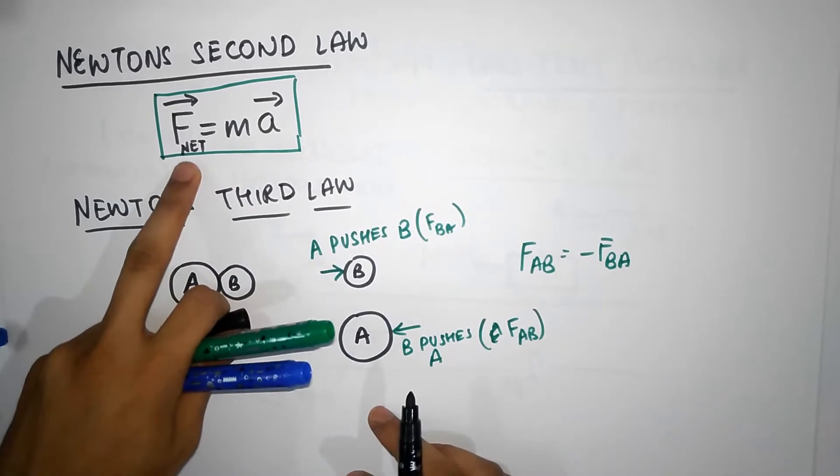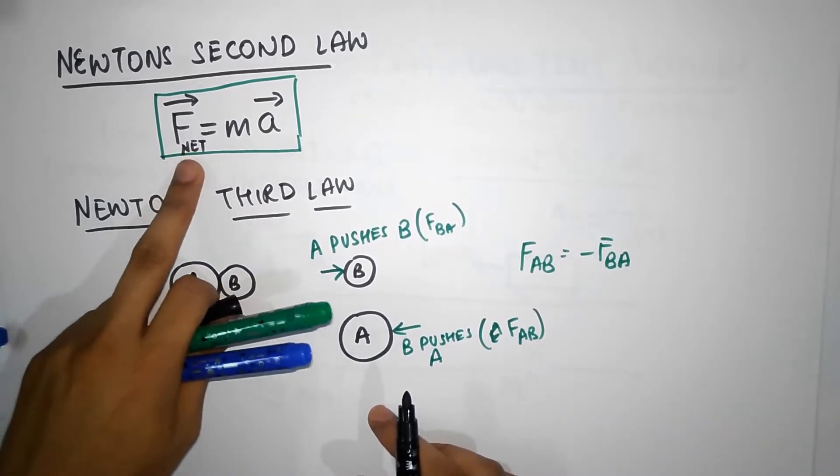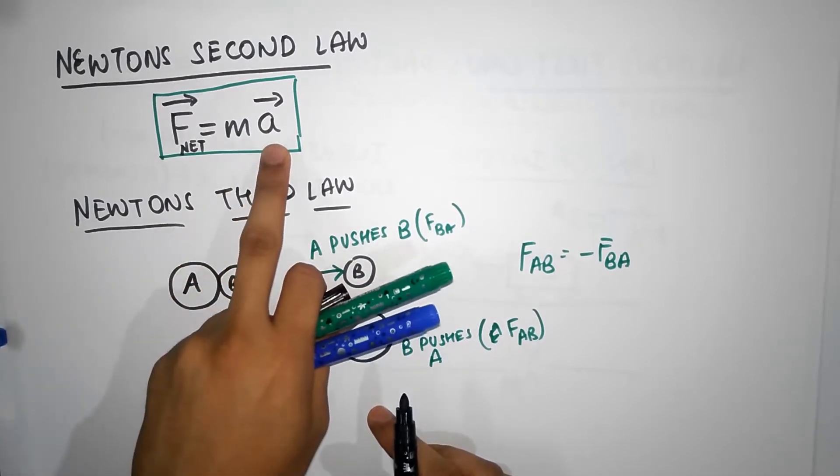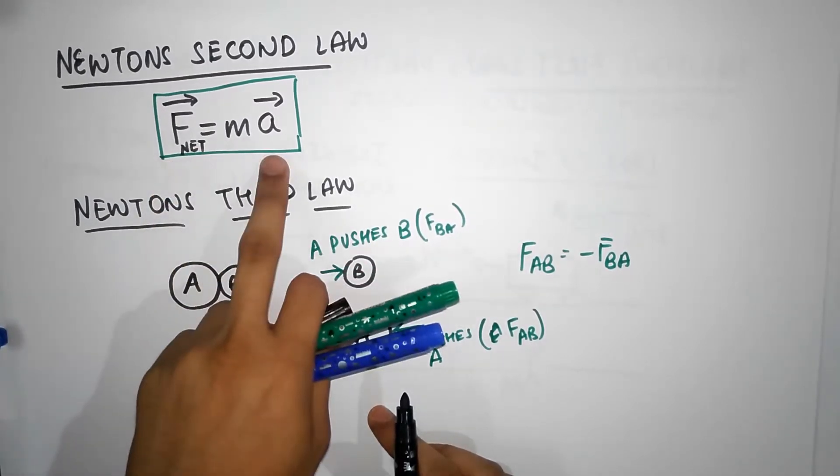The net force means the sum of all the forces acting on a particle of mass m produces an acceleration a given by F equals ma.